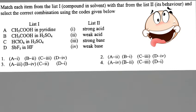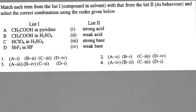Please pause for a moment and check if you can get the answer. If you carefully look at option 3, which shows HClO4 in sulfuric acid as a weak acid, it becomes the right choice.